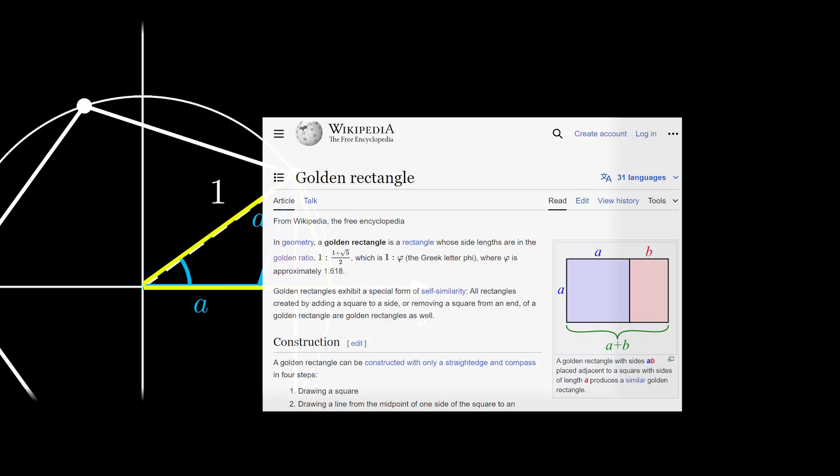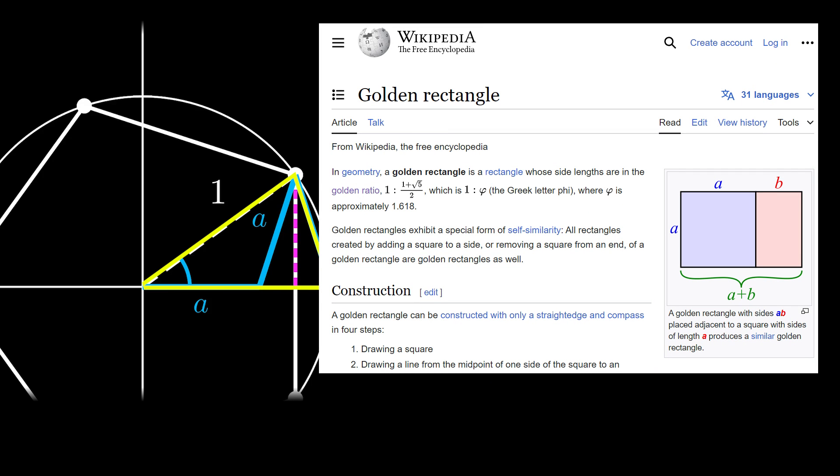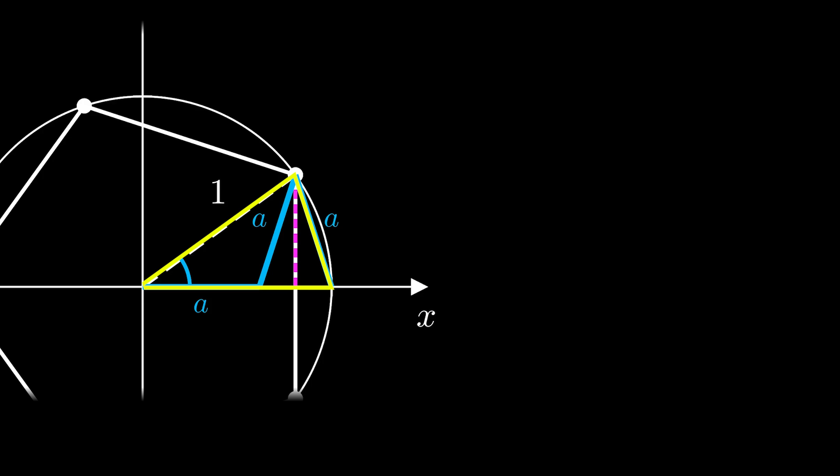Its more famous cousin is the golden rectangle, where if you cut out a similar golden rectangle, you're left with a square. In the golden triangle, you can cut out a similar golden triangle, and you're left with an isosceles triangle.